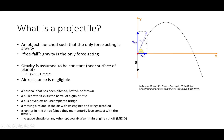So let's start with the basics. A projectile is just an object launched such that the only force acting is gravity. So a projectile is really just an object that is in free fall. Free fall means that gravity is the only force acting.